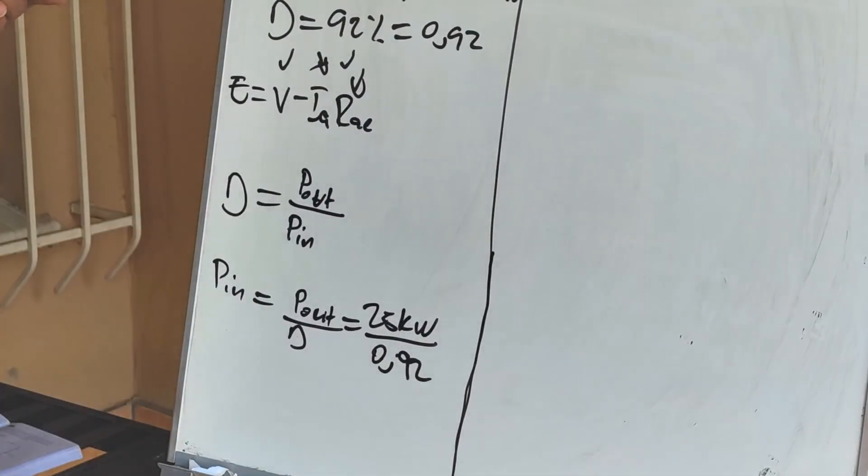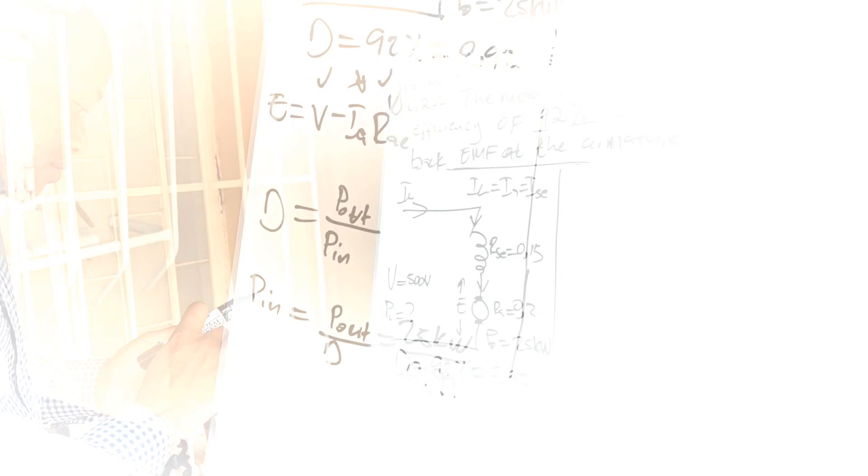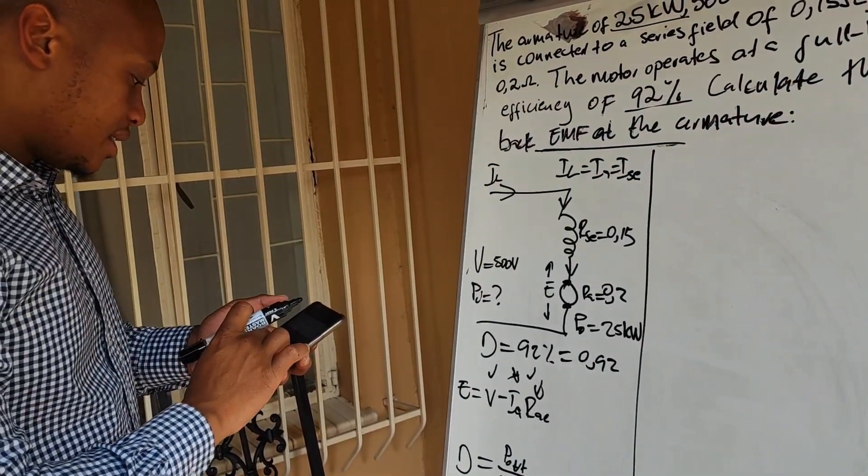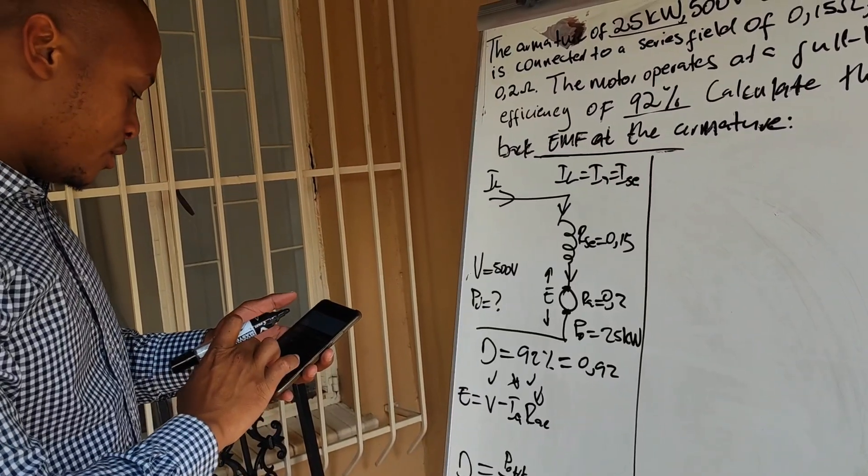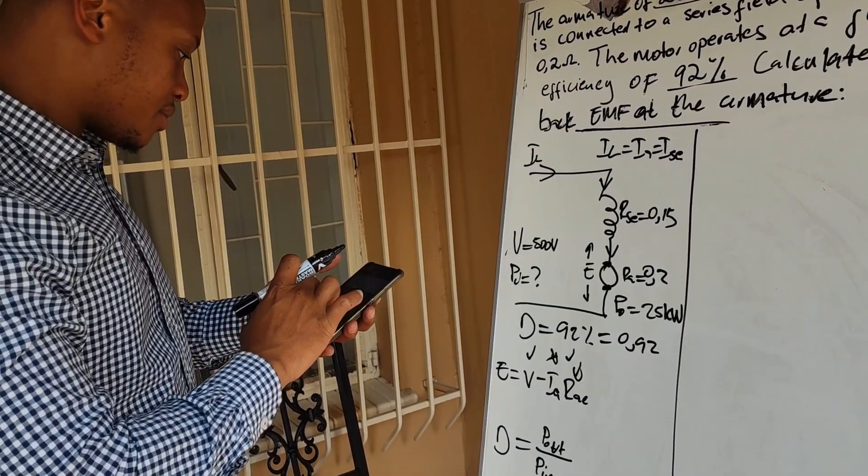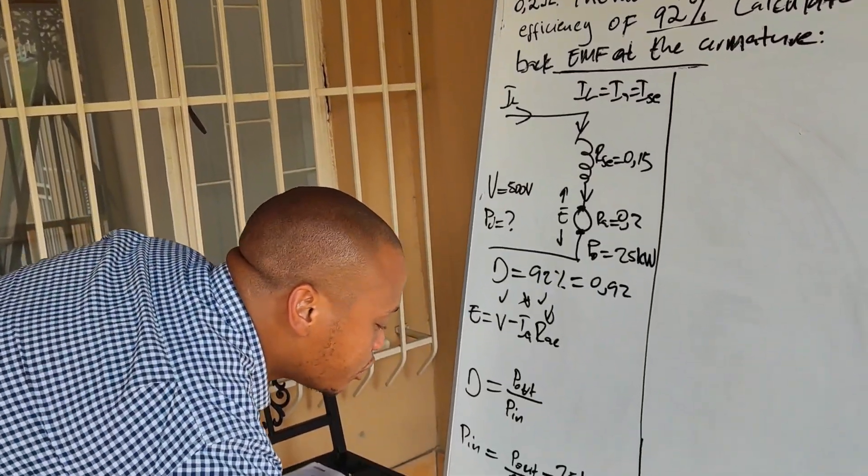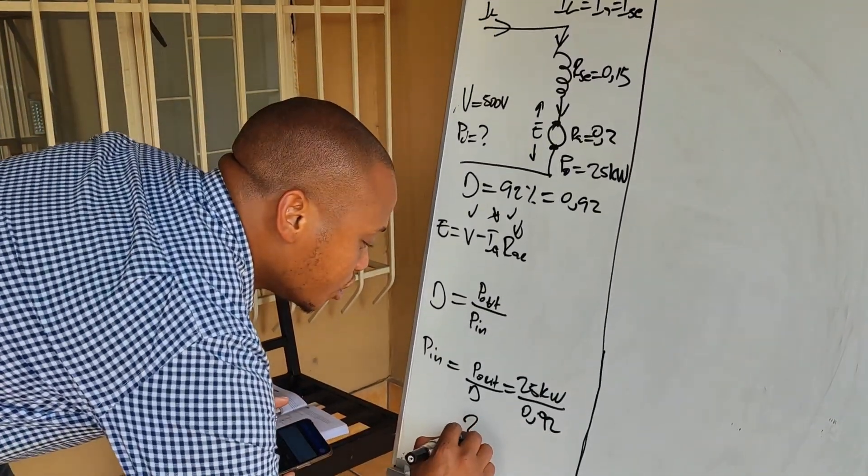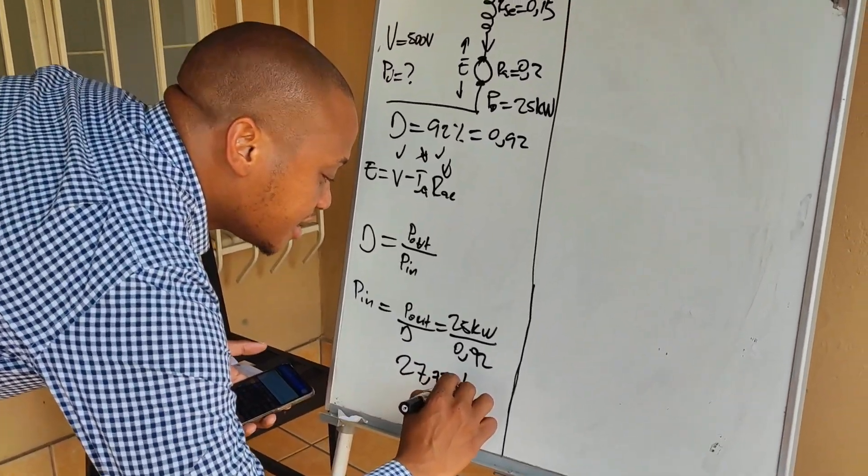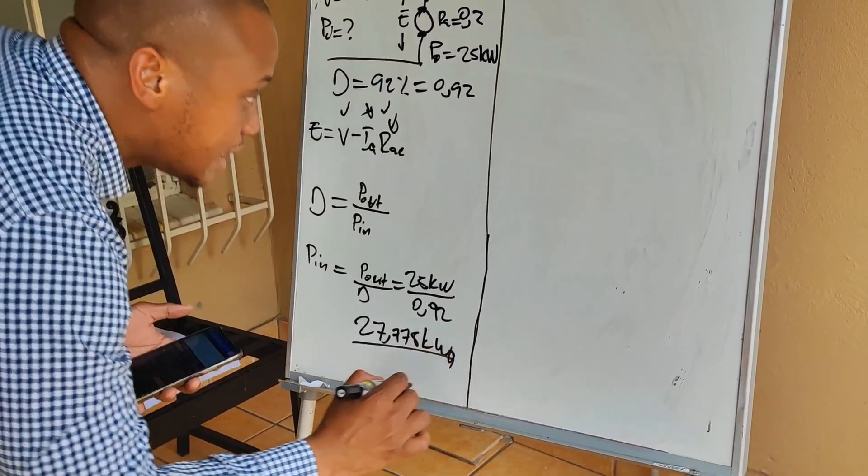And if you punch that into your calculator, you will get that the value of the input power P in is equal to 27.778 KW. So that is the input power.